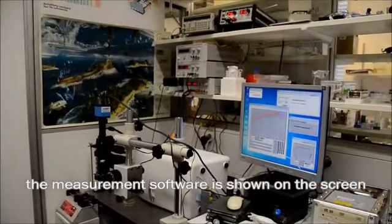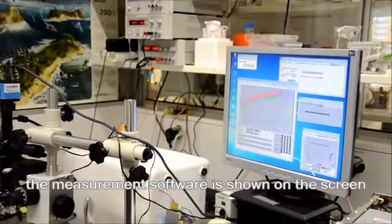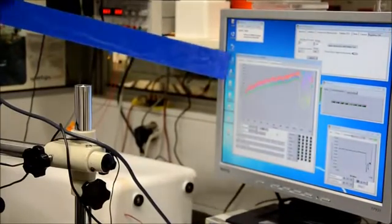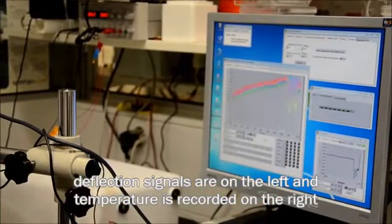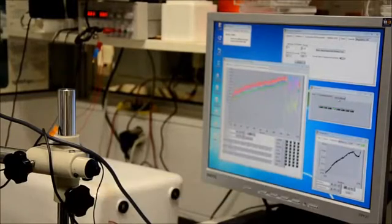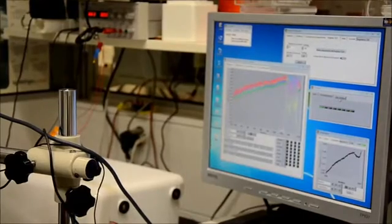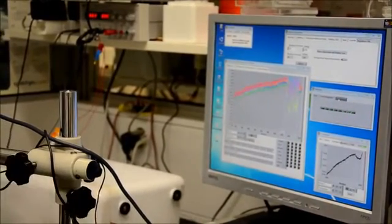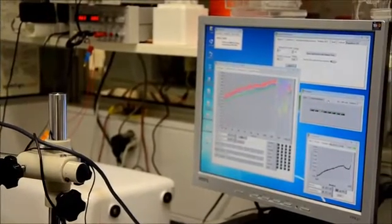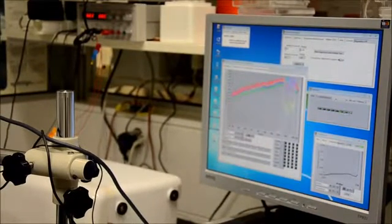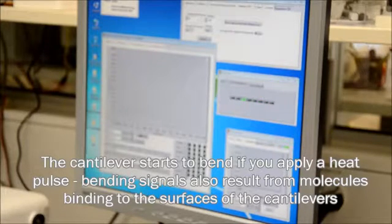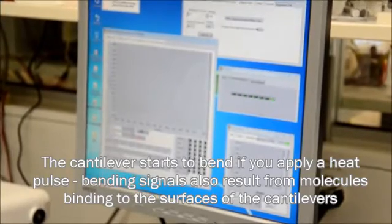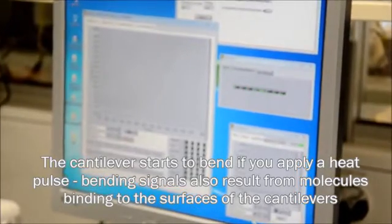The actual measurement software we can see here on the screen. I started an experiment to show you how the system actually works. You have here the deflection signals from a measurement. Then here is the temperature recorded. I can show you what happens if the cantilevers are bent. I do a temperature experiment where I briefly increase the temperature. The temperature increase results in bending of the cantilever. See the cantilever start to bend if you apply the heat pulse. This is the working principle. We have bending signals while you have binding of the molecules to the surface of the cantilever.